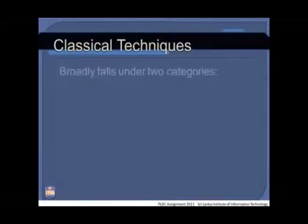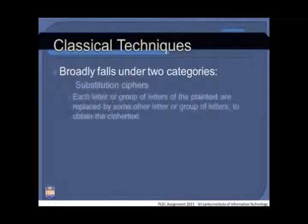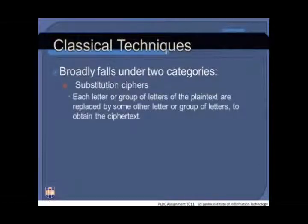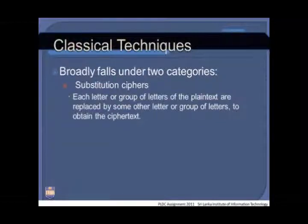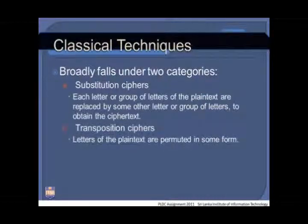Classical techniques used in symmetric key encryption fall under two categories. First, substitution ciphers, where each letter or group of letters of the plain text is replaced by some other letter or group of letters to obtain the ciphertext. Second, transposition ciphers, where the letters of the plain text are permuted in some form.